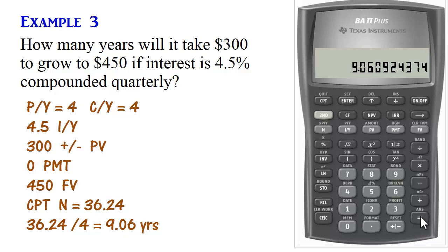Again, if you prefer to set P/Y to 1, second P/Y 1, enter, scroll down. You have to set C/Y to 4 because it's compounded quarterly. Enter. So in that case, if you compute N, you will just get the number of years.